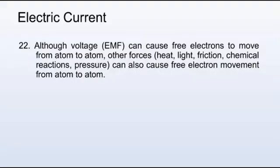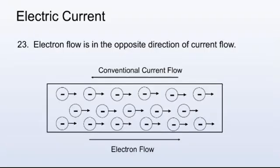Although voltage, or EMF, can cause free electrons to move from atom to atom, other forces such as heat, light, friction, chemical reactions, and pressure can also cause free electron movement from atom to atom. Notice in this illustration how electron flow is in the opposite direction of current flow. Don't ask me why that is. It's just the way it is. Some things will always remain a mystery.